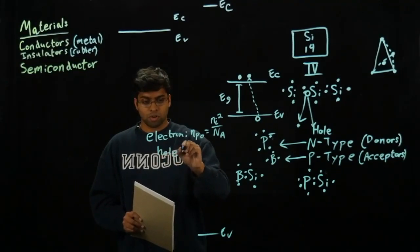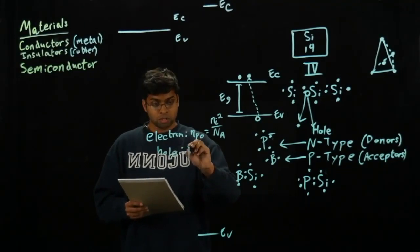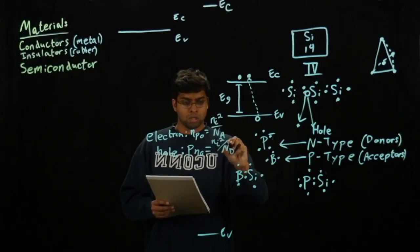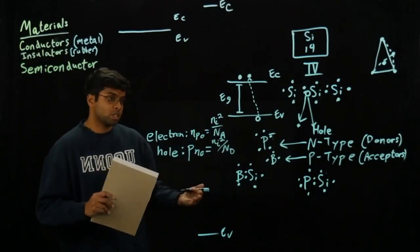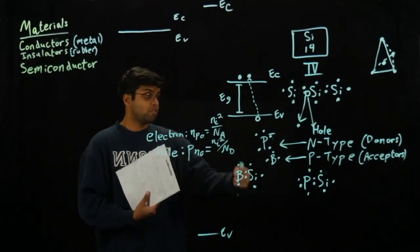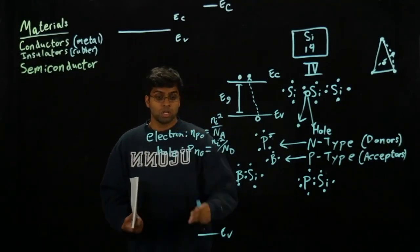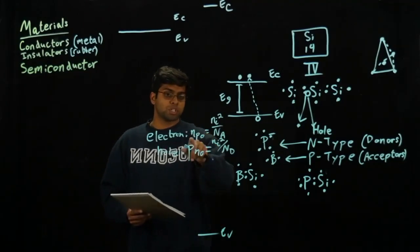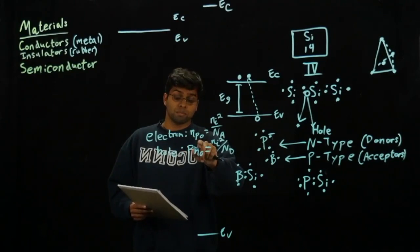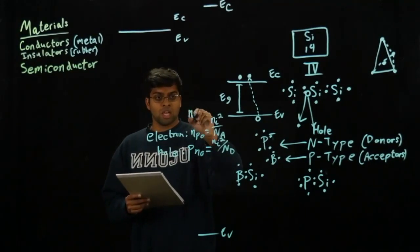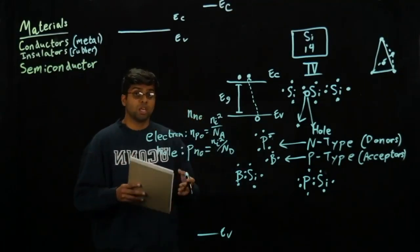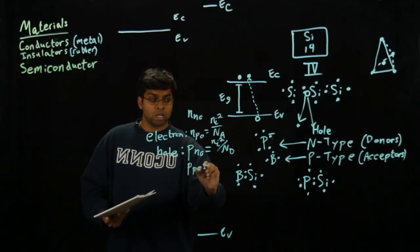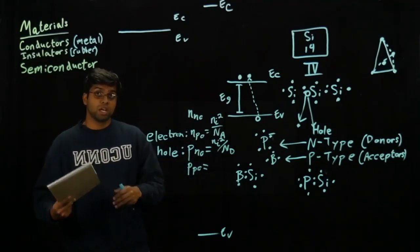The same thing can be done with hole concentration. Whatever is required to be intrinsic divided by the amount of negative dopants is going to give us the amount of positive carriers. One thing to note are the small subscripts. This pretty much says the electron concentration in a p-type device. You can also write that as nno—the electron concentration in an n-type silicon. Likewise with holes, you can do ppo, and that just means the amount of positive carriers within a p-type semiconductor.